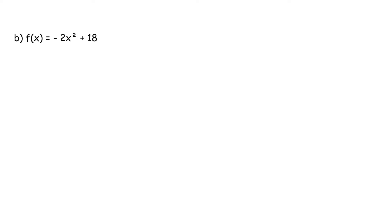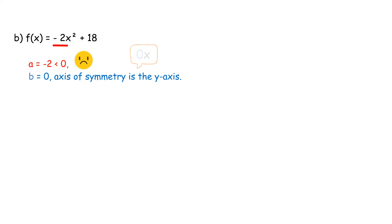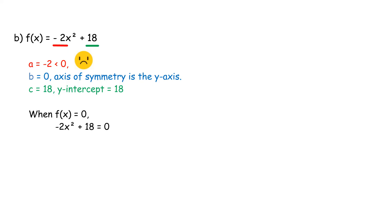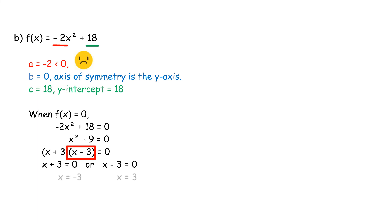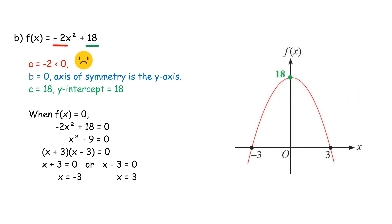Solution B: f(x) equals negative 2x² plus 18. Value of a equals negative 2, a less than 0, thus the curve opens downwards. Value of b equals 0, thus the axis of symmetry is the y-axis. Value of c equals 18, thus y-intercept equals 18. When f(x) equals 0: negative 2x² plus 18 equals 0. Simplify by dividing all terms by negative 2: x² minus 9 equals 0. Factorize: (x plus 3)(x minus 3) equals 0. Thus x equals negative 3 or x equals 3. Now we can use this information to sketch the graph.